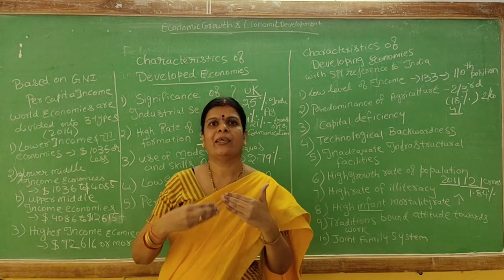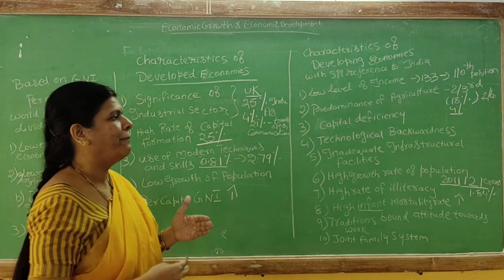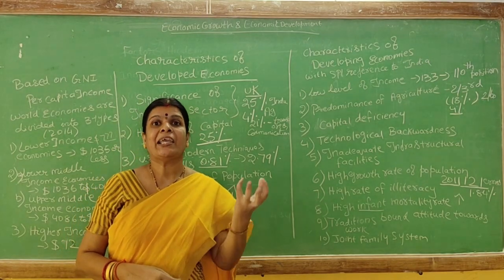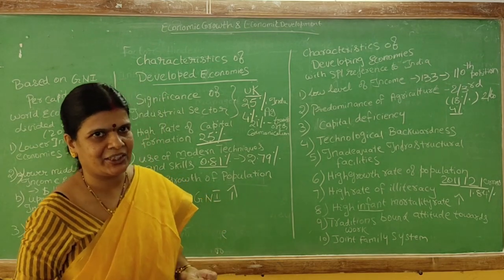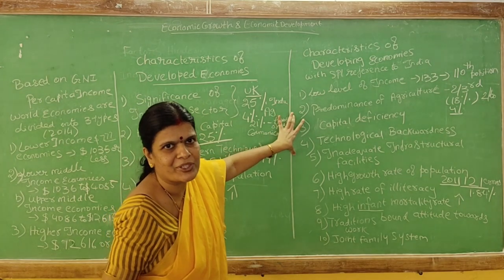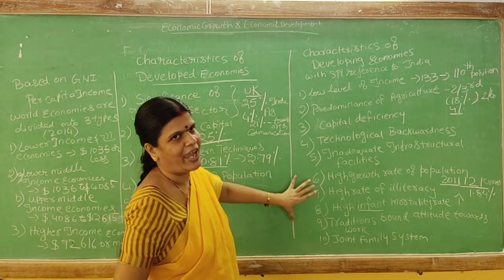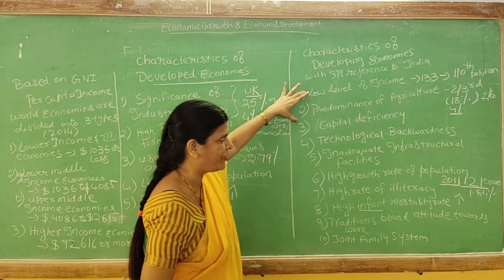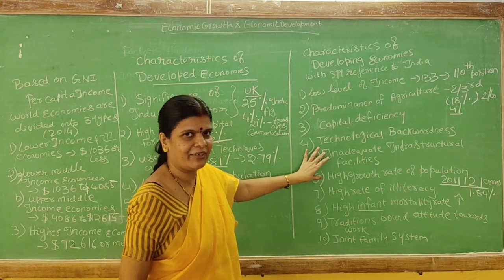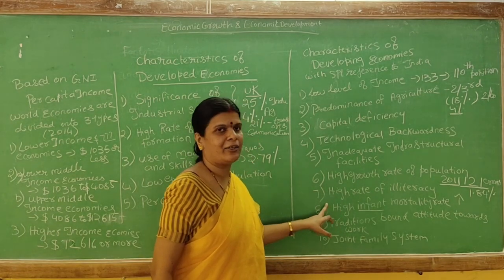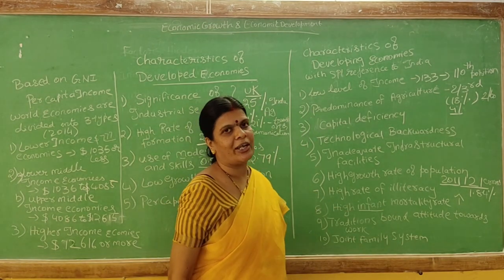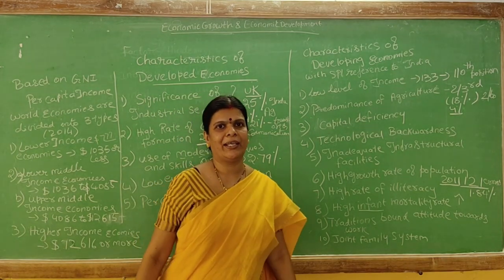Even though our Indian economy is slowly developing, because of more population, heavy pressure on land, and some industries not adopting change, we are still in the stage of development — not fully developed, and not all people are enjoying the fruits of economic development. To summarize, the characteristics of a developing economy are: low level of income, predominance of agriculture, capital deficiency, technological backwardness, inadequate infrastructure facilities, high growth rate of population, high rate of illiteracy, high infant mortality rate, tradition-bound attitudes toward work, and joint family system.